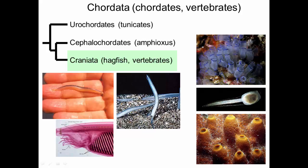Amphioxus, this cephalochordate here, is called a cephalochordate because it actually has a head region. You can see they're quite small. These two groups are basal to Craniata, which is hagfish and vertebrates, which we'll see next.